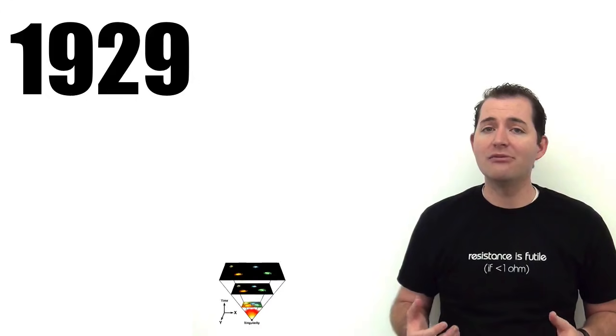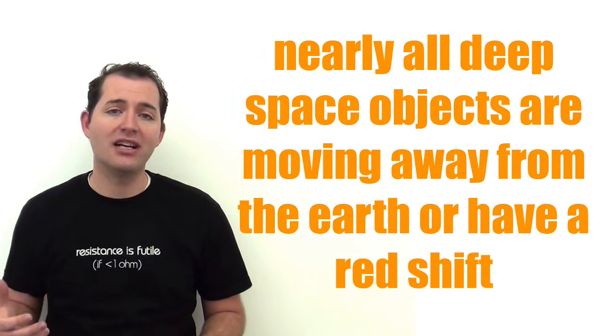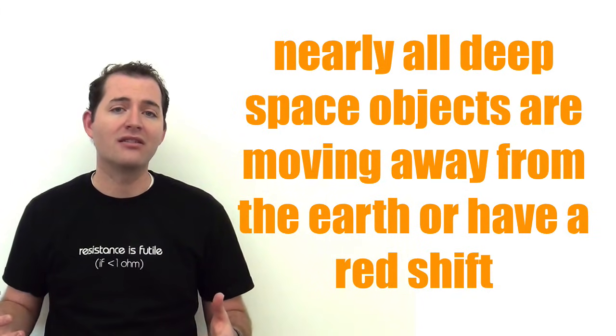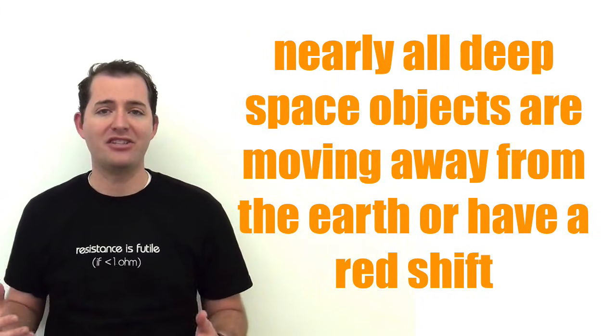In 1929, Edwin Hubble confirmed that our universe was expanding. He found that nearly all deep space objects were moving away from the Earth and had a Doppler shift or more specifically a redshift.